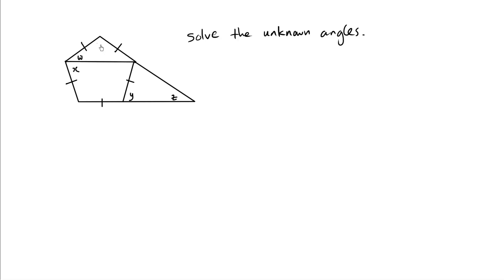Let's solve for this missing angle — we'll call this theta. So there's a theta here, a theta here, and a theta here. These angles are all the same because we're talking about a perfect pentagon.